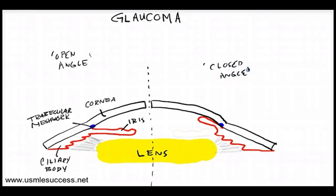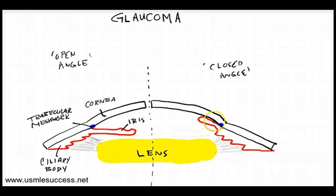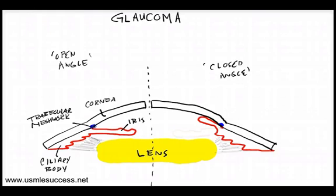When we say angle, this refers to the angle between the iris and the cornea. Anatomically, we're looking at our cornea along here, our iris right here, we have our ciliary body here with cilia connecting to our lens, changing its shape. And in here we have this structure known as the trabecular meshwork, which sits at the base of the cornea near the ciliary body, and it drains aqueous humor from the anterior chamber of the eye.